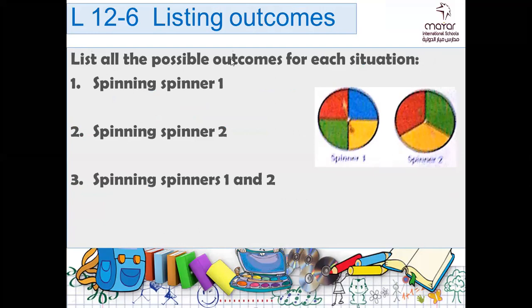Let's try. Can you do number one? I can get red, blue, yellow, and green. Amazing. So if we spin spinner one, we could have red, blue, yellow, green.